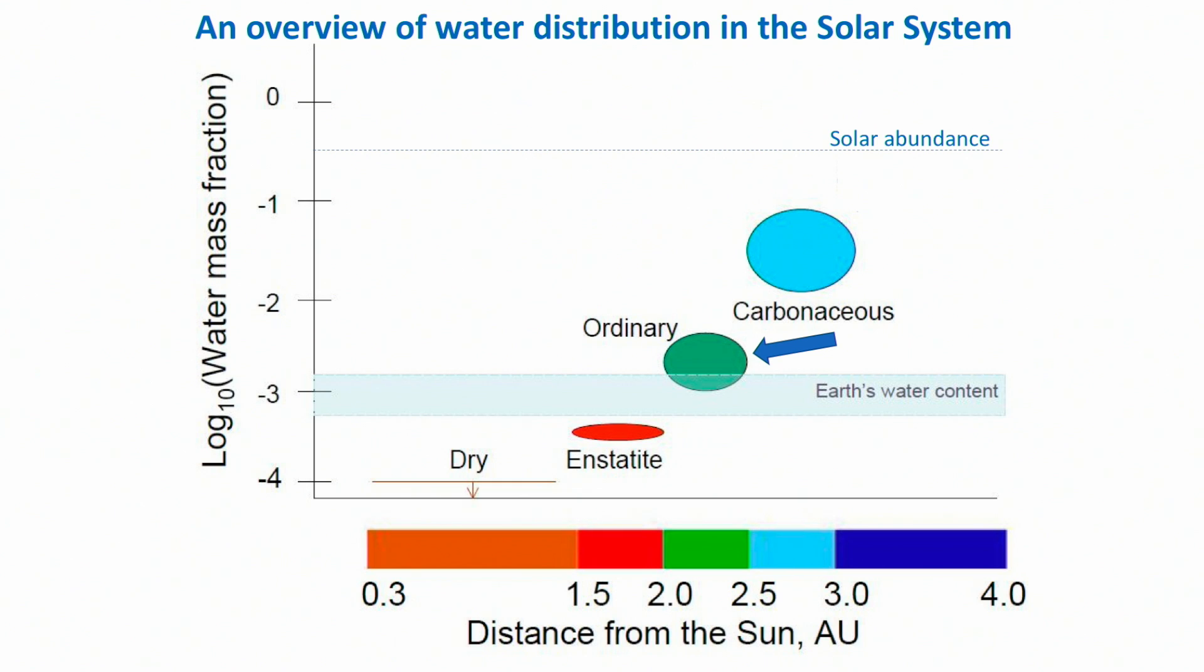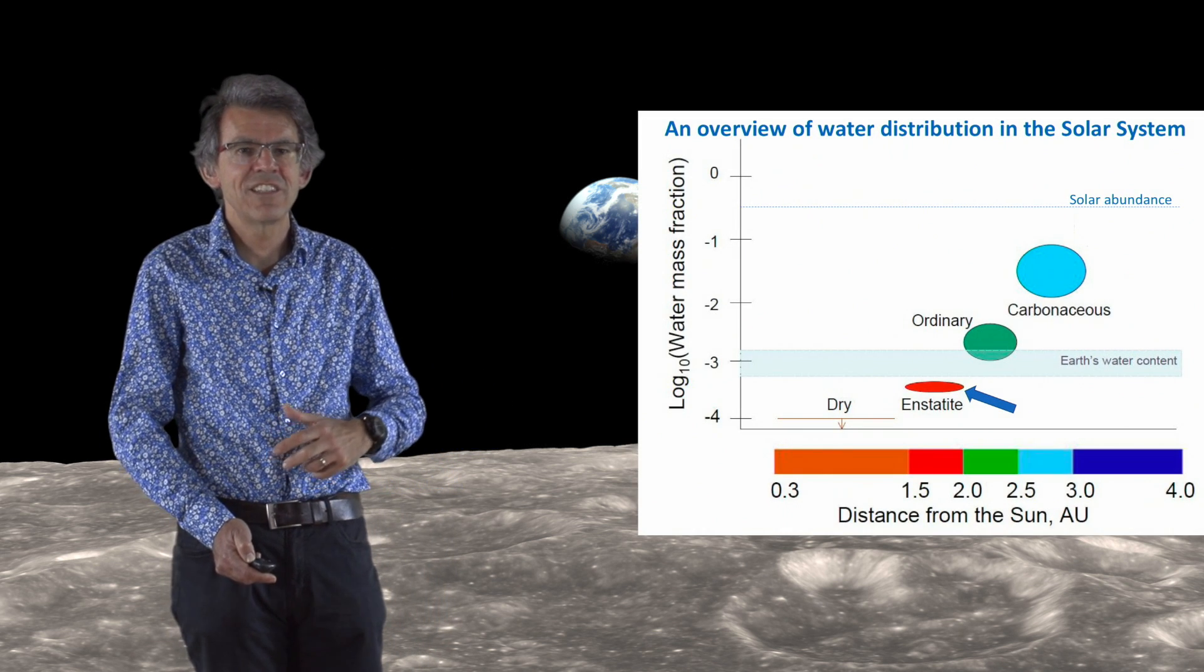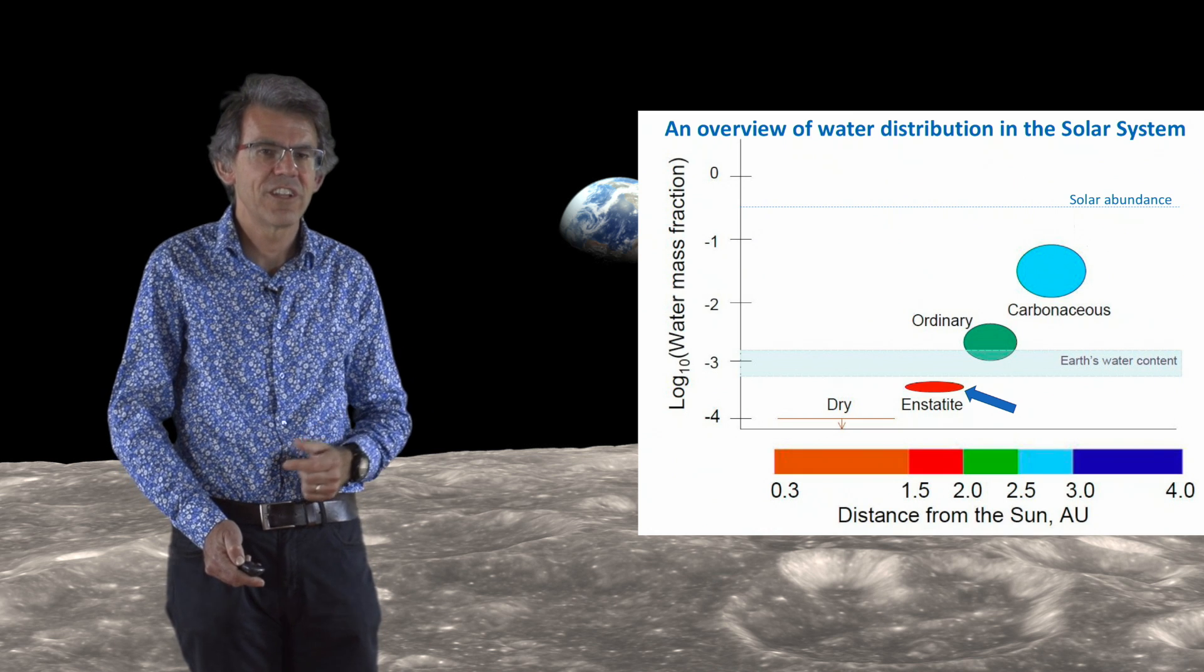From the inner part of the asteroid belt, we receive instead two other kinds of meteorites. Ordinary chondrites contain a fraction of a percent of their mass in water, and the enstatite chondrites are even drier, less than 0.1 percent of their mass is in water. These meteorites come from asteroids located between 1.5 and 2 AU for the enstatite chondrites, 2 to 2.5 AU for the ordinary chondrites.